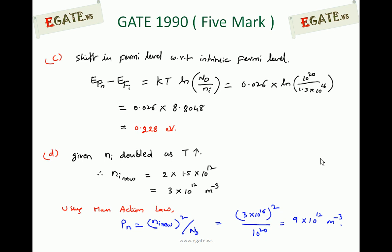Third, we calculate the shift in Fermi level with respect to the intrinsic Fermi level. The equation is: EFn − EFi = kT × ln(Nd/Ni), where Nd = 10²⁰ and Ni = 1.5×10¹⁶, and kT = 0.026 eV. This gives 0.026 × ln(10²⁰ / 1.5×10¹⁶) = 0.228 electron volts. This means the N-type Fermi level moves above the intrinsic Fermi level by 0.228 eV.